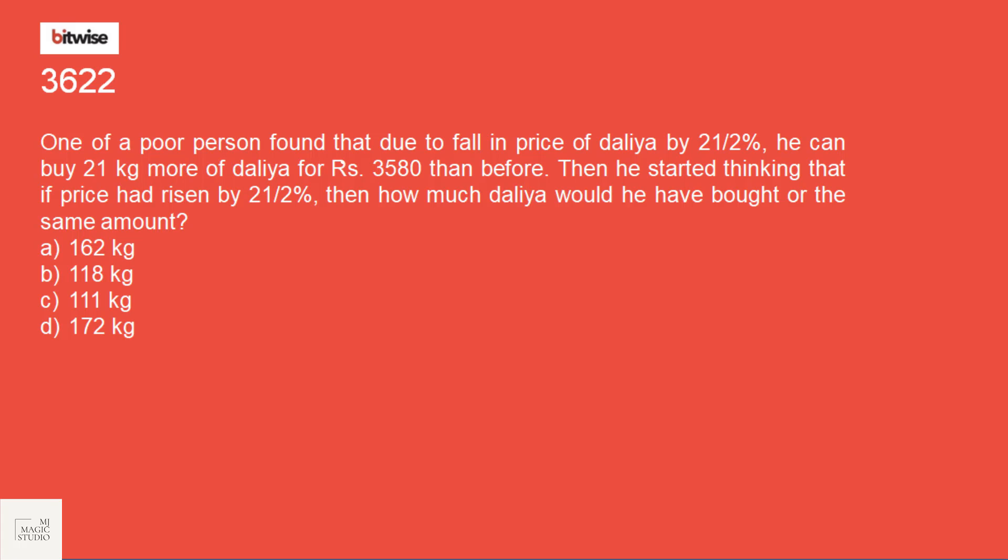One of a poor person found that due to fall in price of Dalia by 21/2%, he can buy 21 kg more for Rs. 3580 than before. We can use our rule 1 line changing rule to solve this. But I often request you people to use rule 1 when these percentages are like whole numbers and you can use that rule very quickly. In case of non-whole numbers, you might find it complicated to use.